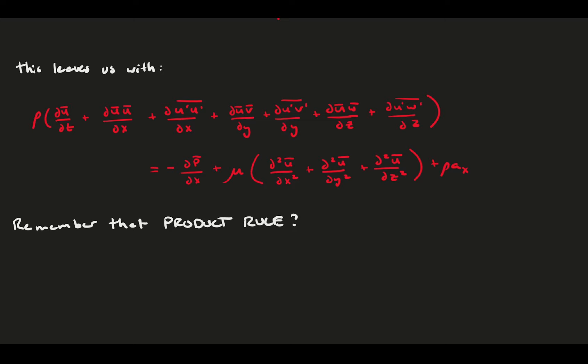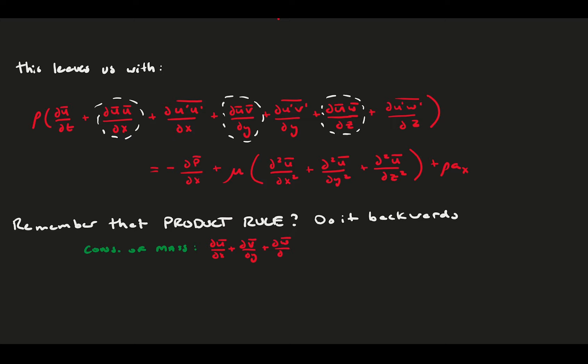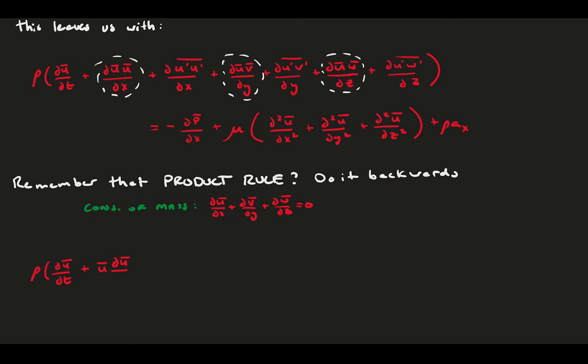Remember that product rule from before, where we used to rearrange things? Let's undo it, reverse it and unrearrange our mean product terms on the left-hand side. It's really the same product rule with the conservation of mass applied again. And that's how we get the final form of the conservation of momentum equation in the x-direction.